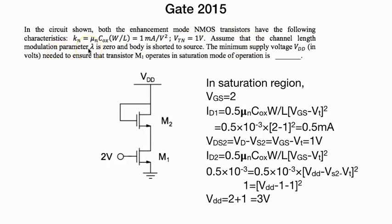Body shorted to the source. The minimum voltage VDD is needed to ensure that M1 operates in saturation mode. We know M2 is already in saturation mode.